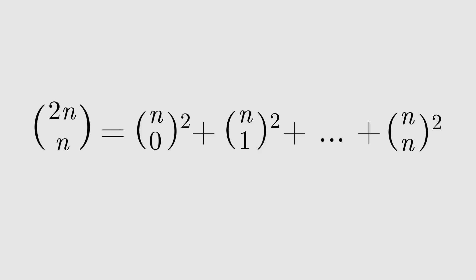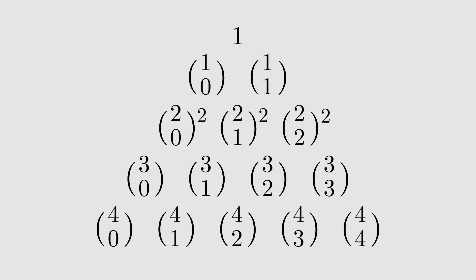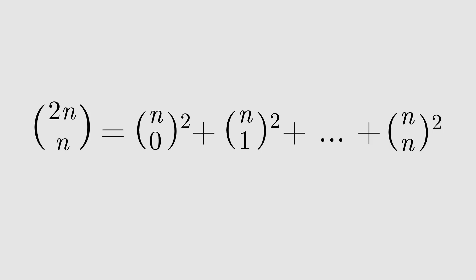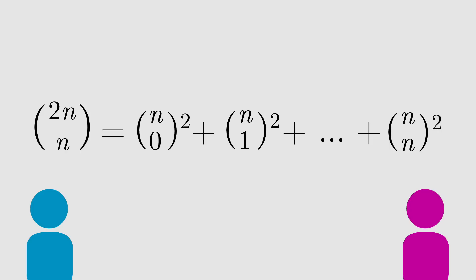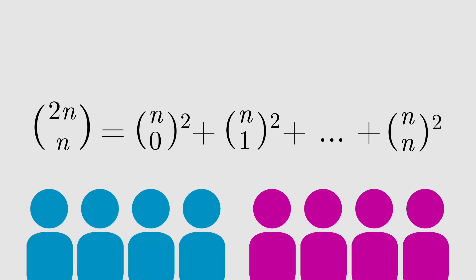Let's look at one more amazing formula with binomial coefficients. We can think about this formula as taking the elements in one row of Pascal's triangle, squaring each of them, and then adding them up — the sum is exactly a specific element further down in the triangle. Another way to think of this formula is to count the number of n-person committees that can be formed from n men and n women.